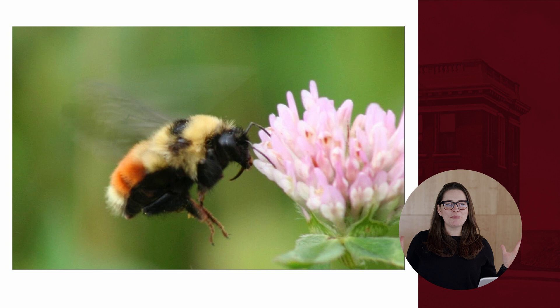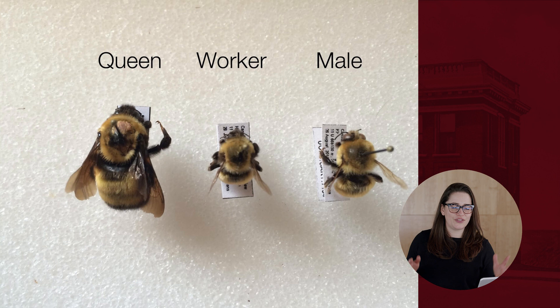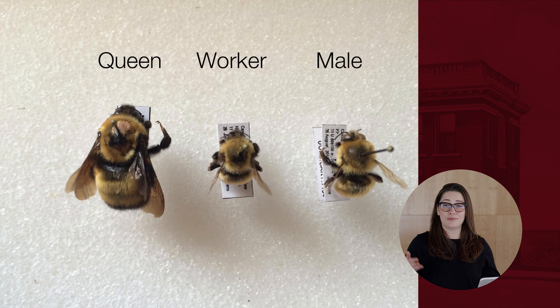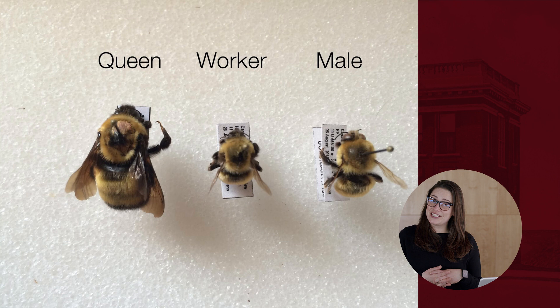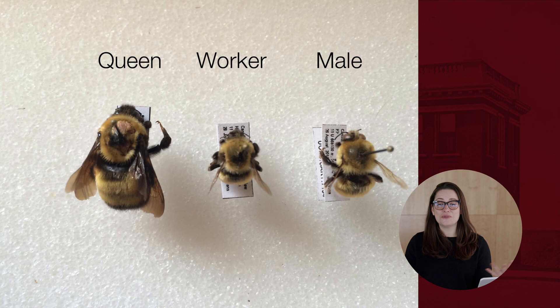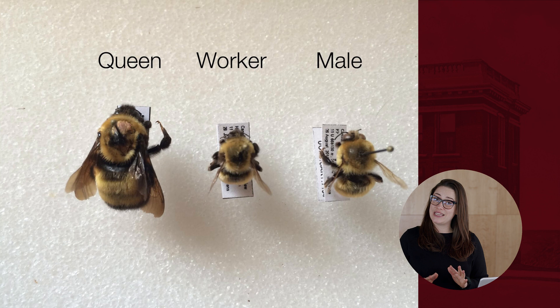Let's talk about bumblebees. Bumblebees are social insects — they have a queen, worker bees, and male bees. The queen and workers are both female; the queen is larger because she's fed more and better food during development, enabling her to lay eggs and grow colonies. Workers do all the work: collecting food, performing nest hygiene, feeding colony members, and fanning the entrance to cool it. Male bees have one role — mating with queens — and then they die.